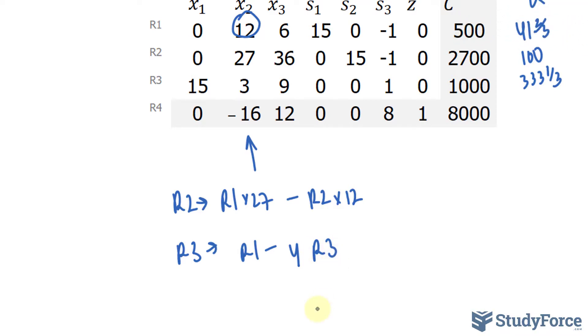Lastly, to make this negative 16 into a zero, I'll multiply all of row 1 by 16 and add it to 12 times row 4.